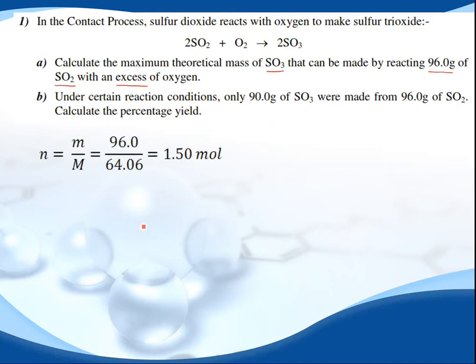What we do first is use the equation n equals m divided by M, mass divided by molar mass. We put the mass on top, which is 96.0. The molar mass of SO2 is 64.06, and we get 1.50 moles of SO2.